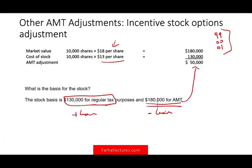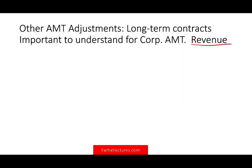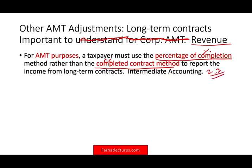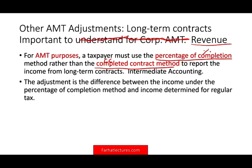Let's take a look at other adjustments, specifically revenue adjustment from long-term contracts. For AMT purposes, a taxpayer must use the percentage of completion method rather than the completed contract method to report income from long-term contracts. If you don't know the difference, you can go to my intermediate accounting course — it would take two to three hours to explain in detail. But as long as you have a good idea today, you'll be able to follow.